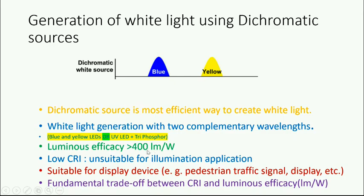The luminous efficacy of dichromatic sources is greater than 400 lumens per watt. However, the CRI is low, making it unsuitable for general illumination, though it can be used for traffic signals, displays, and personal accessories. The fundamental trade-off is that as CRI increases, luminous efficacy decreases, and vice versa. This trade-off has also been asked in university examinations.